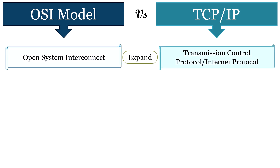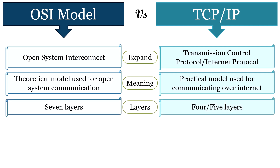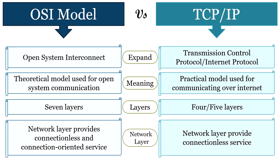Now let us move toward the differences between the OSI and TCP/IP models. OSI stands for Open System Interconnect, whereas TCP/IP stands for Transmission Control Protocol Internet Protocol. OSI is a theoretical model used for open system communication, whereas TCP/IP is a practical model used for communicating over the internet. OSI is a seven-layer model, whereas TCP/IP is a four or five layer model.